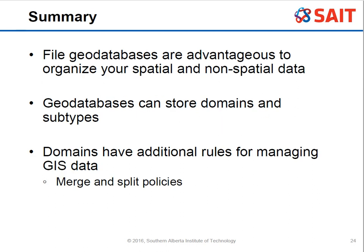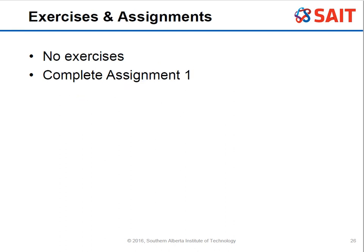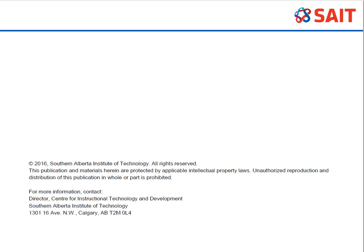As a summary, file geodatabases are advantageous because they organize spatial and non-spatial data nicely, combining tables and rasters all together. We can store domains and subtypes to avoid errors for anyone entering data, and domains have additional rules for managing GIS data, including merge and split policies. This is all still within managing vector and raster data and will go towards Assignment 1. I look forward to the next lecture in Objective 4.